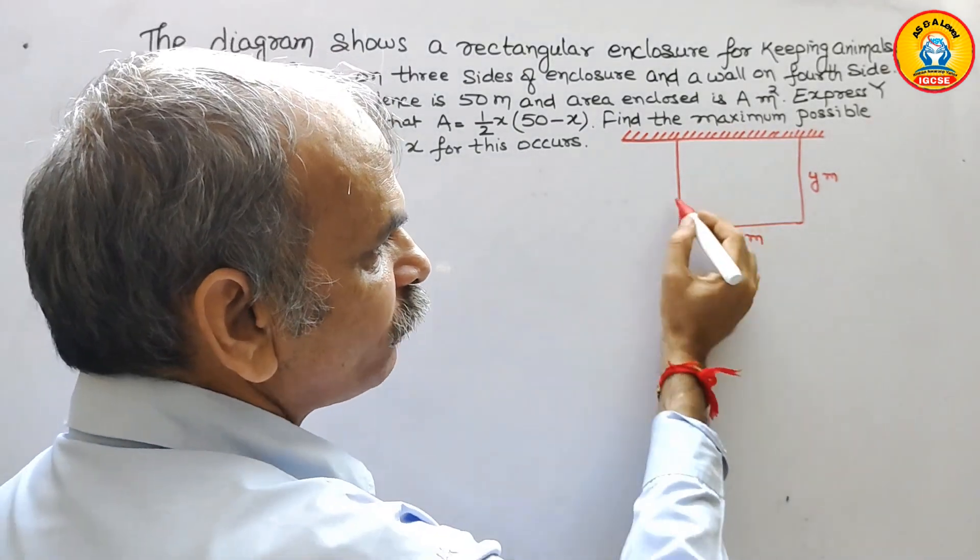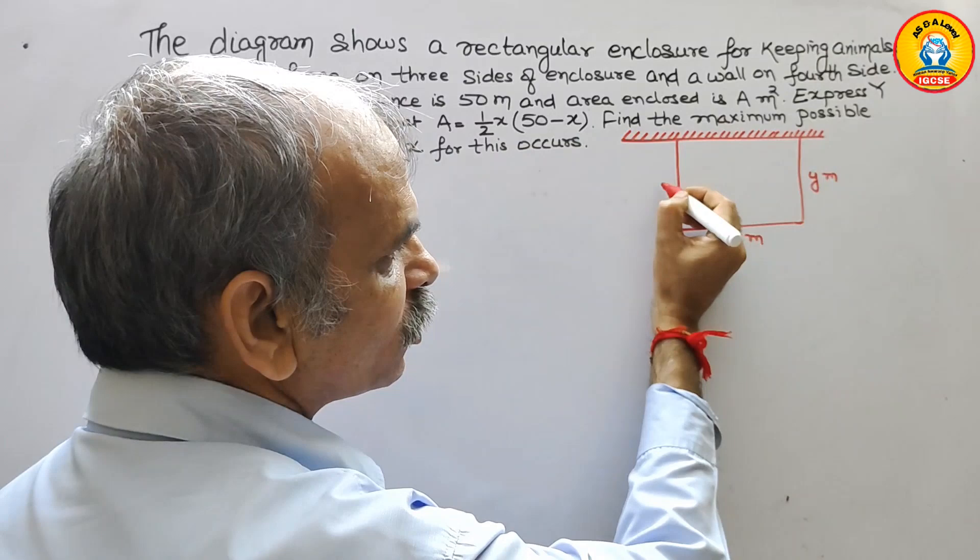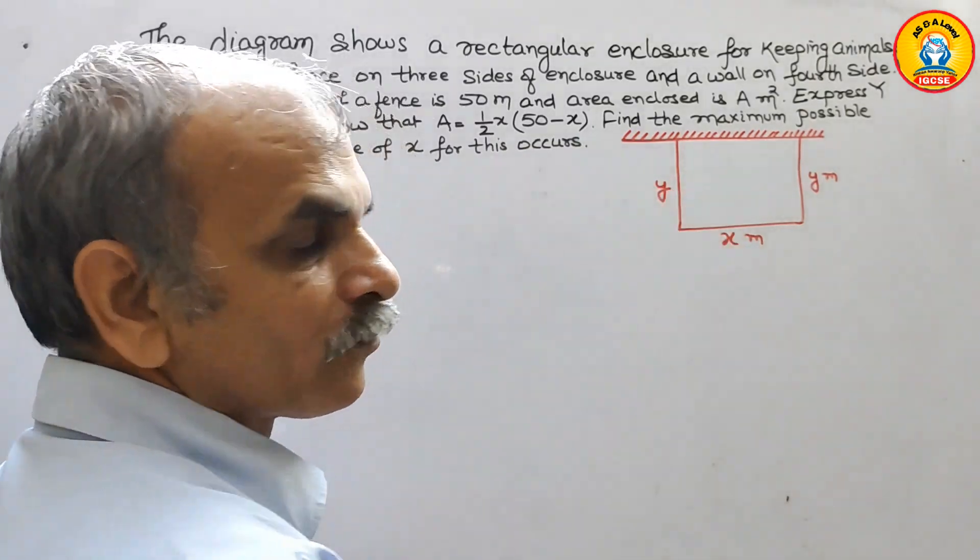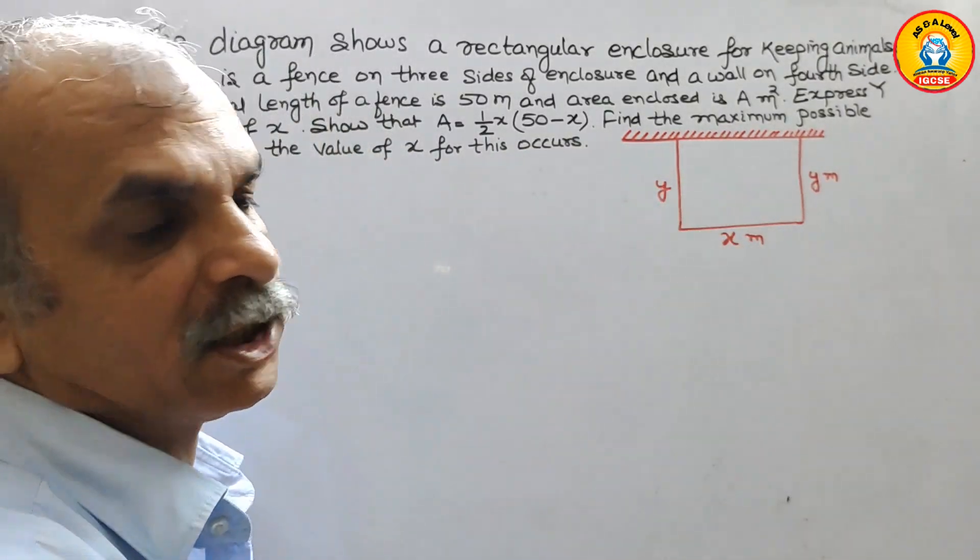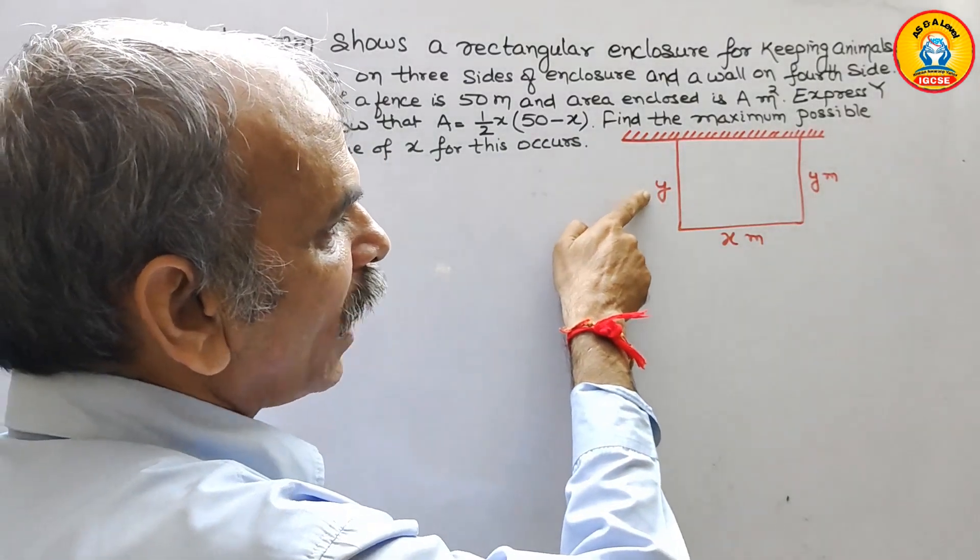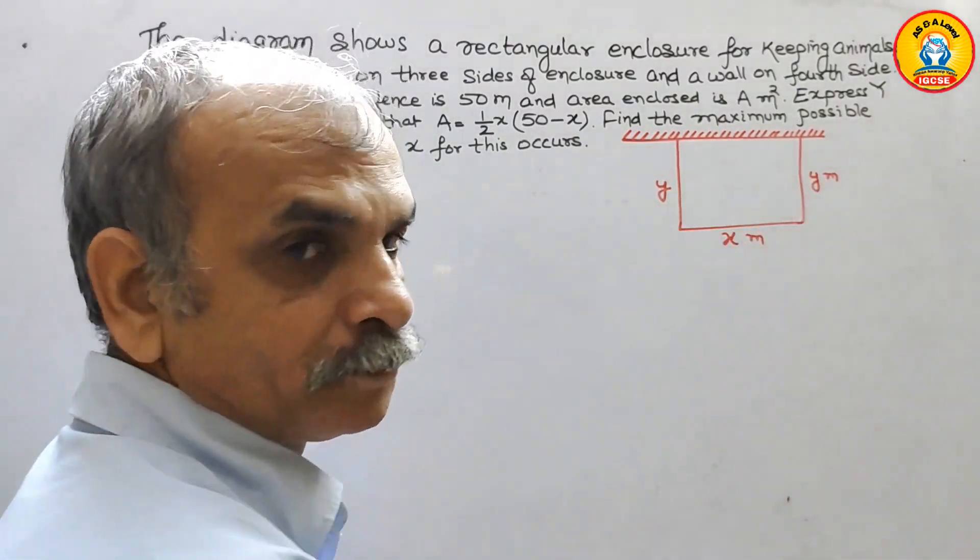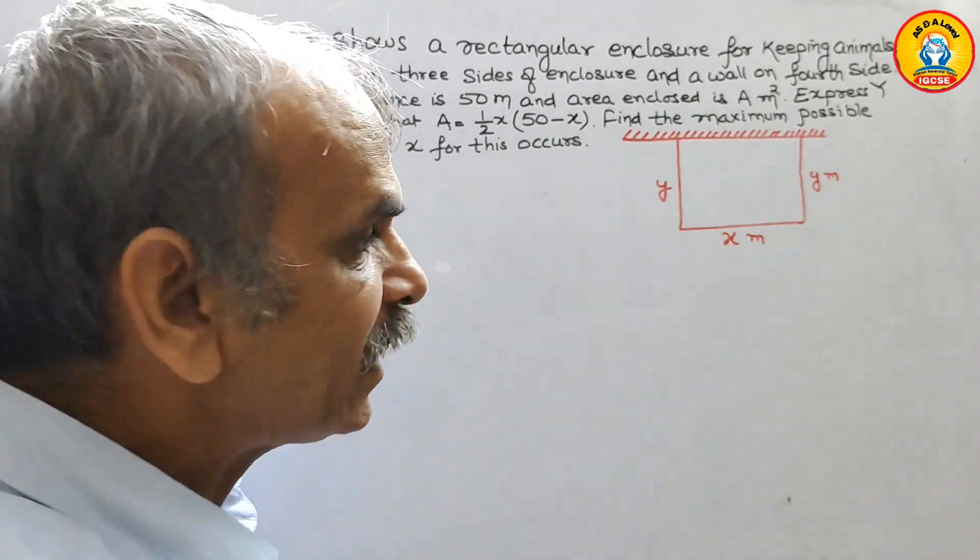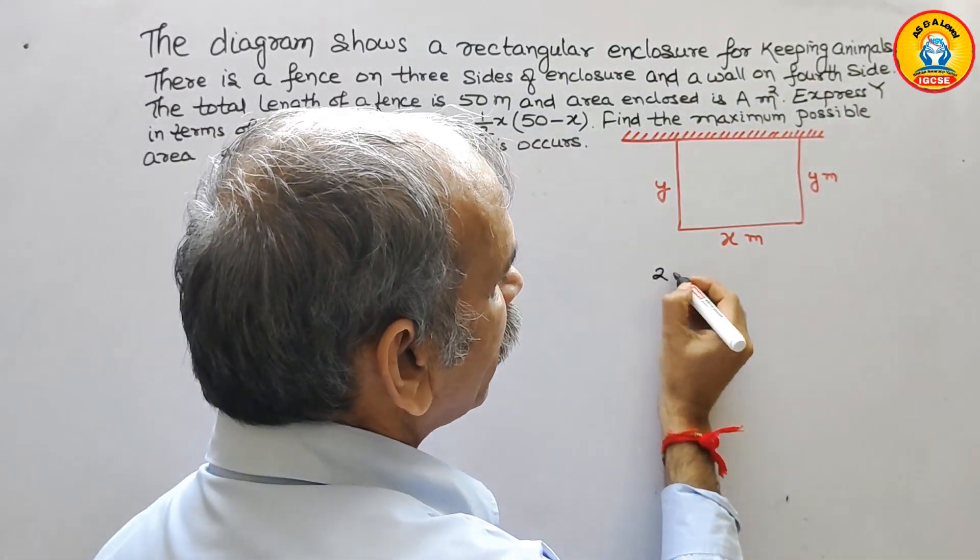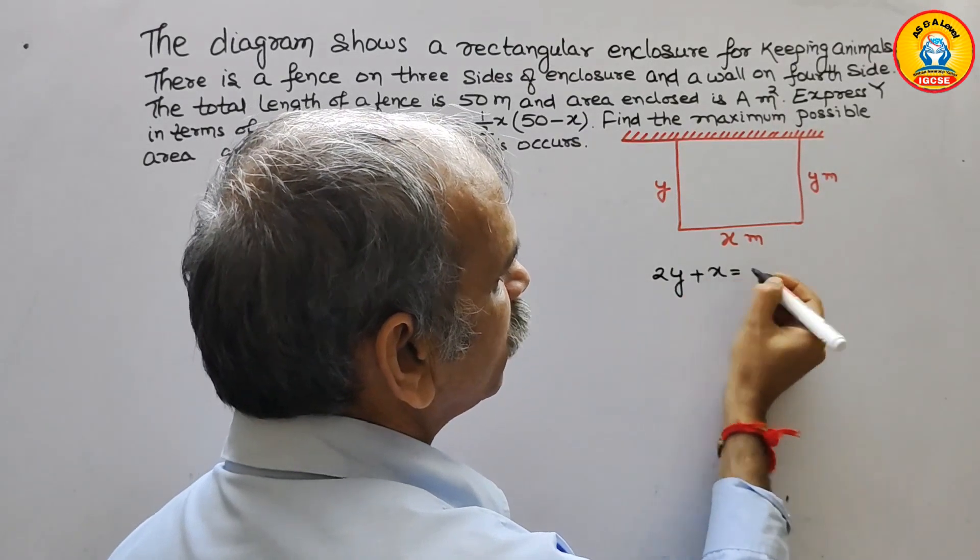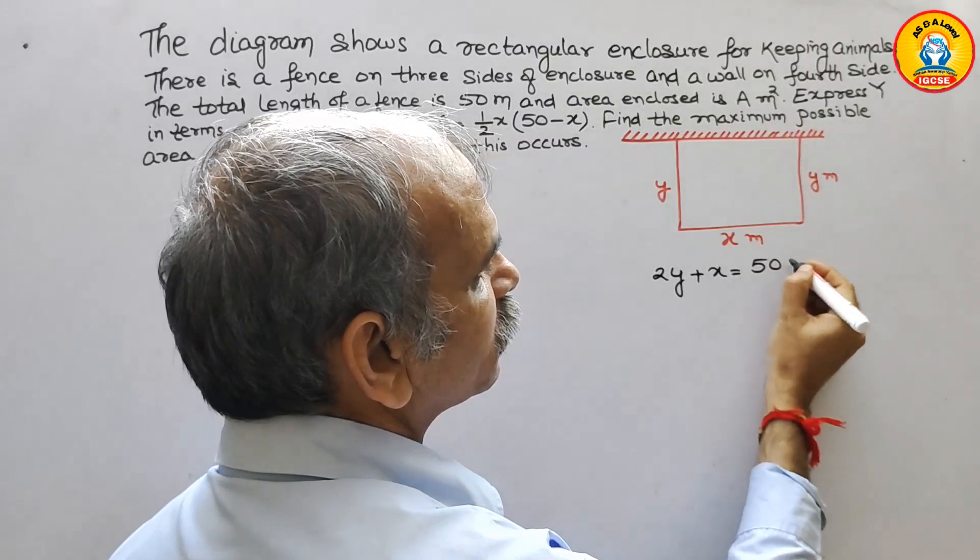So now if you see, if this is a rectangle, this is y, this is also y. So now the total fence is what? y plus x plus y. So we can say 2y plus x is equal to the length they have given, 50 meters.